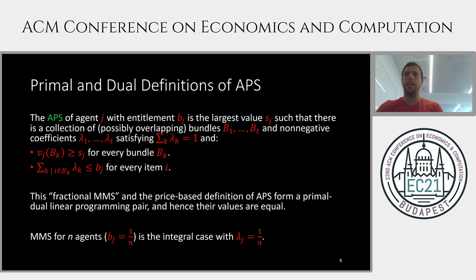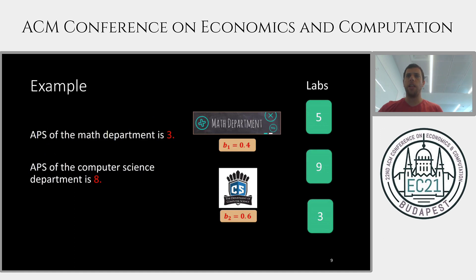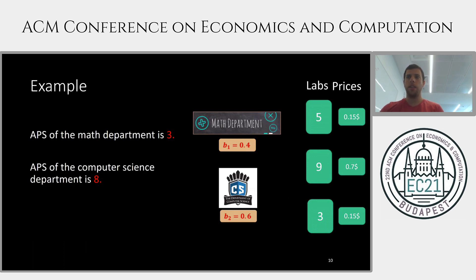The maxi-min share is the integral version of the dual definition, where the weight of all bundles must be exactly 1/n. Back to the earlier example, the any-price share of the math department is 3, since for every pricing the math department can afford at least one item, and the value is exactly 3 because of a specific pricing where they cannot afford more than the least-valued lab. The any-price share of the computer science department is 8, since they can always either purchase the big lab or the two smaller labs.